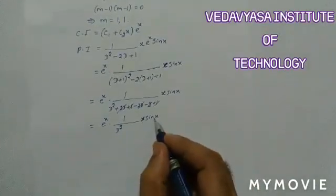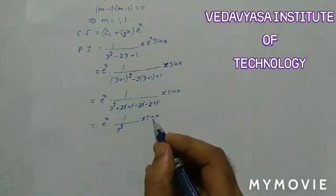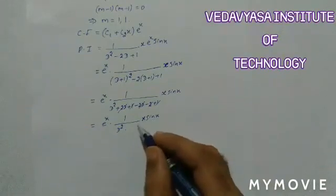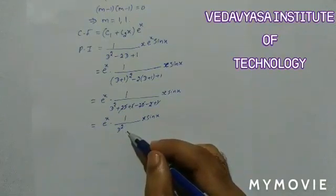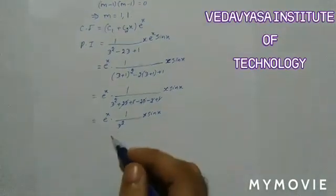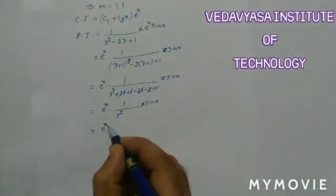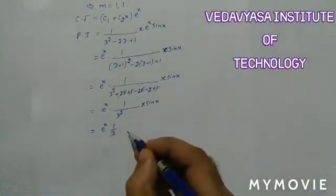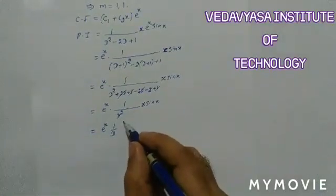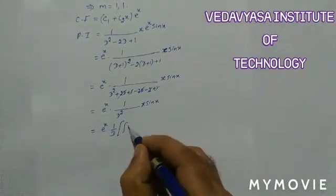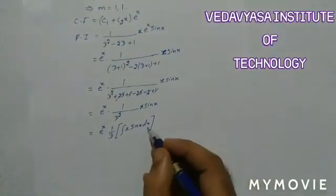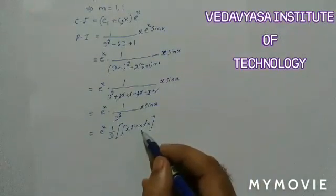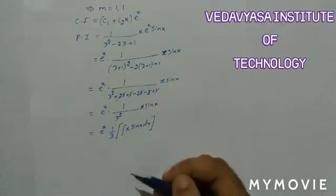Now to simplify x·sin x with 1/D², it is straightforward. We know 1/D² means integrating with respect to x two times. So this equals eˣ · (1/D) · ∫x·sin x dx. We again have two functions, x and sin x, as a product.